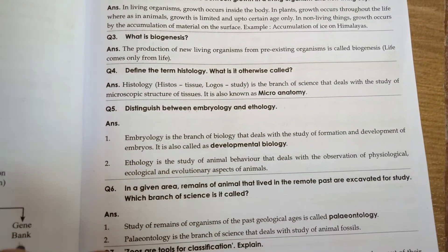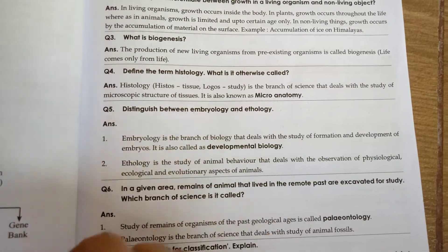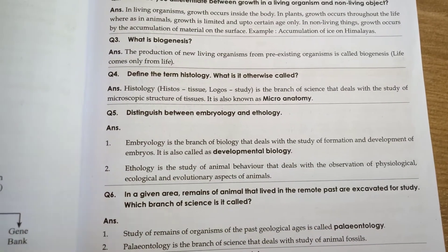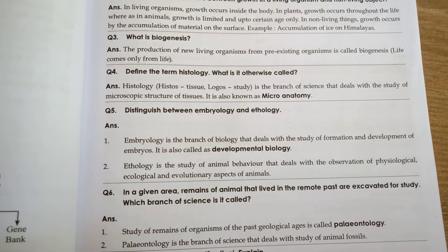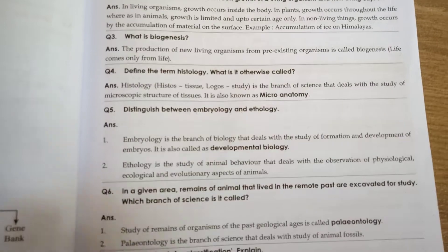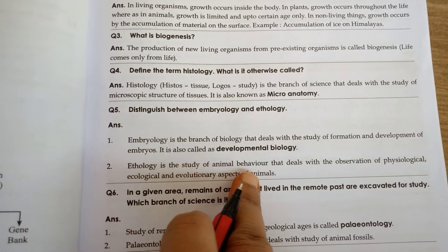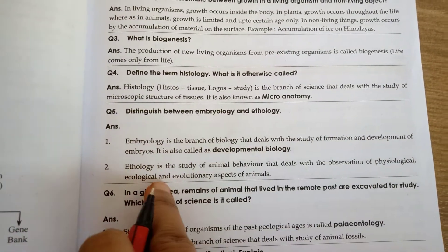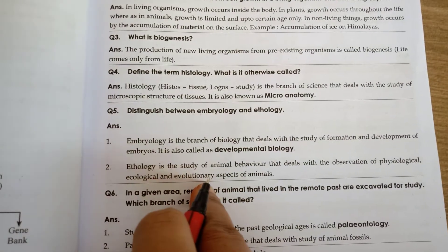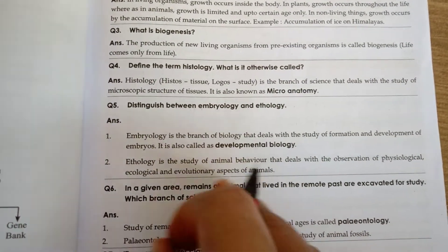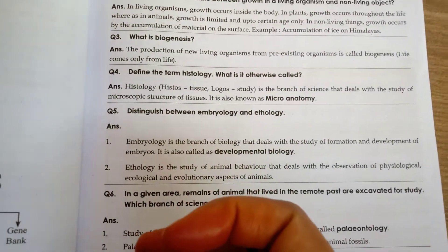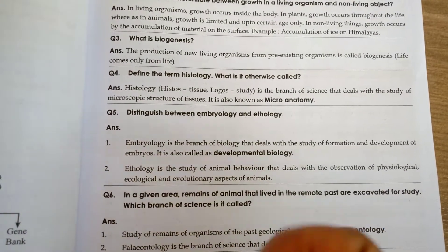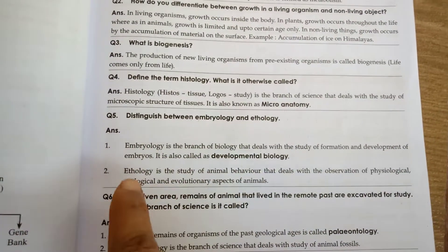Ethology is a study of animal behavior — how animals behave in their environment, dealing with observation of physiological, ecological and evolutionary aspects of animals. It is called ethology.